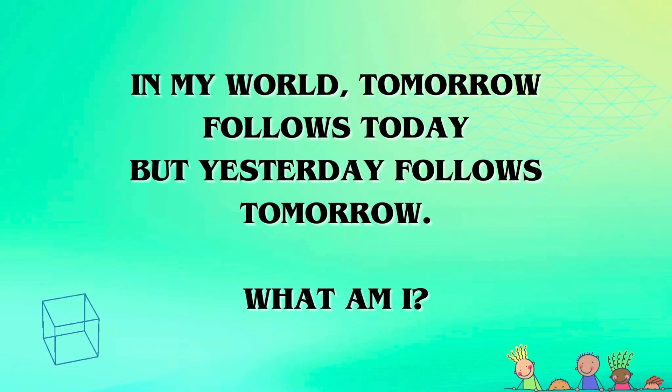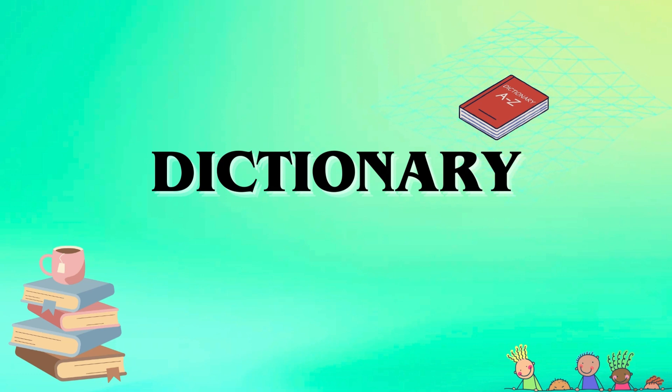Taking a break from the numbers, let's tackle this fun little riddle. Listen to this: in my world, tomorrow follows today, but yesterday follows tomorrow. What am I? It's a dictionary! Why? Because everything is in alphabetical order in the dictionary, which means the word tomorrow comes after the word today, and the word yesterday comes after the word tomorrow.